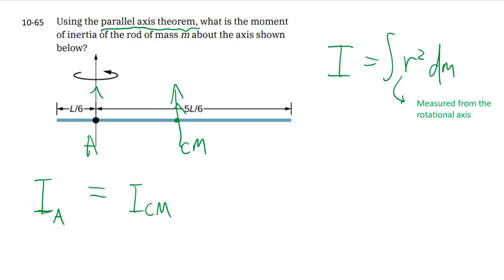We can shift this result going through the center of mass to our new axis that we want by M delta R squared.